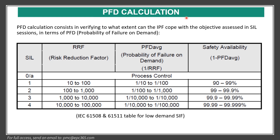For PFD calculation — for example, for SIL 1 — the probability of failure on demand based on IEC is 1 over the risk reduction factor, which is 1/10 to 1/100. Risk reduction factor is between 10 and 100. Availability is 1 minus PFDavg. For example, if you write it in performance standards, the availability of this loop should be 99%. This is the IEC 61508 and 61511 table for low demand SIFs.